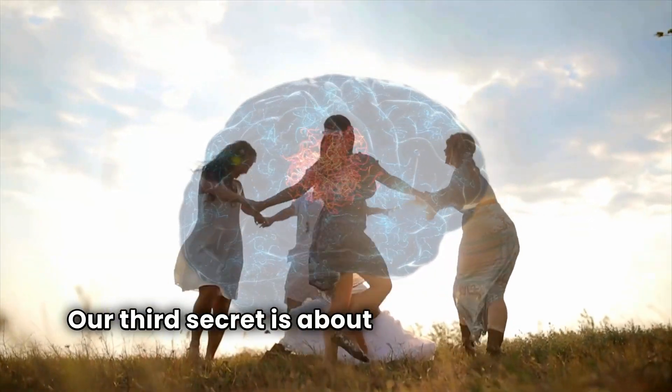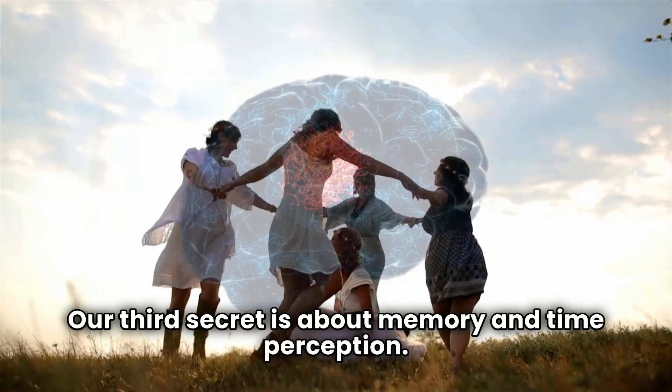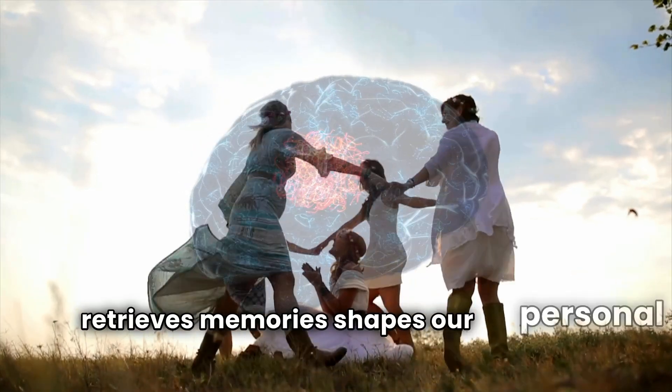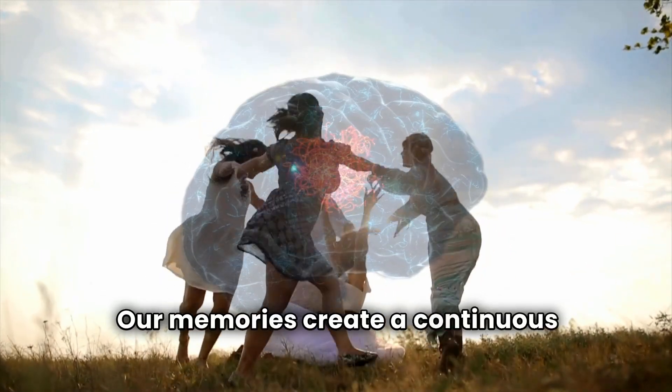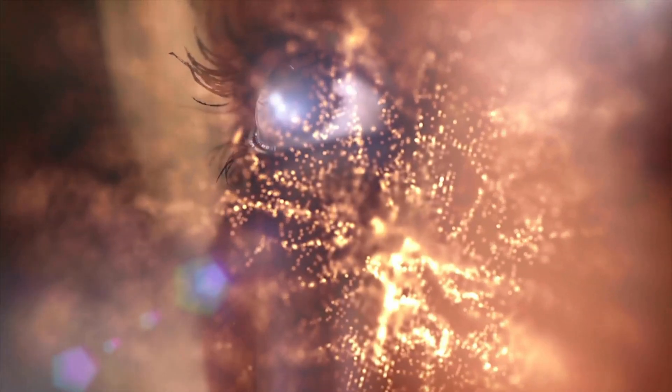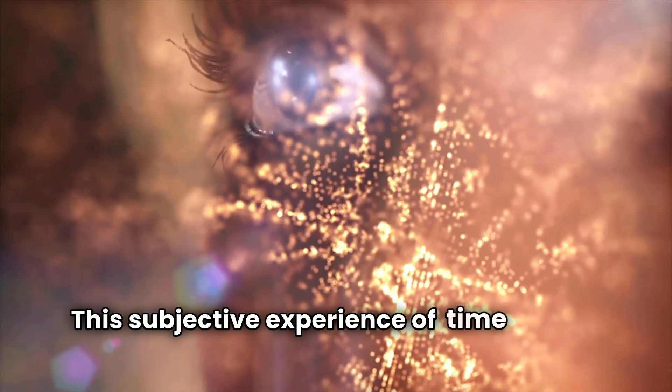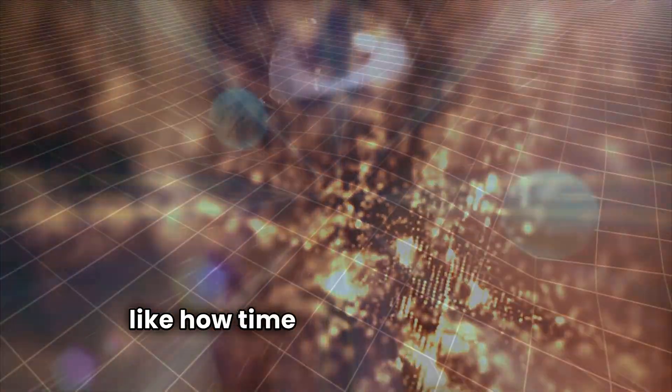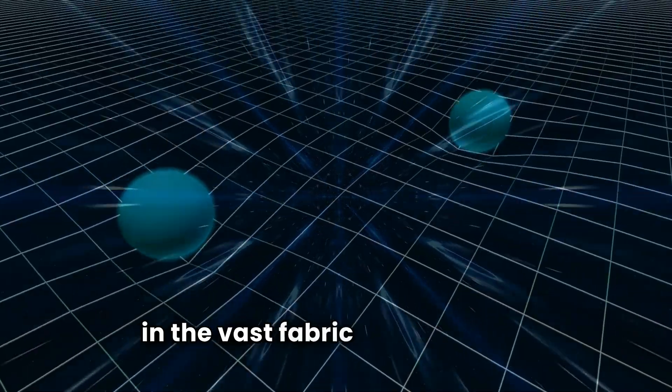Our third secret is about memory and time perception. The way our brain encodes, stores, and retrieves memories shapes our personal timeline. Our memories create a continuous narrative that defines our identity and perception of reality. This subjective experience of time hints at the relative and fluid nature of time itself, much like how time can be warped and stretched in the vast fabric of space-time.